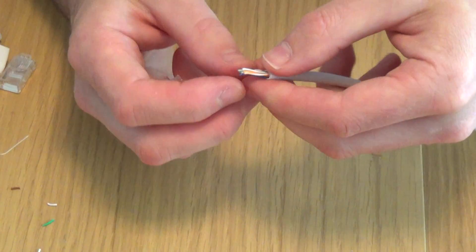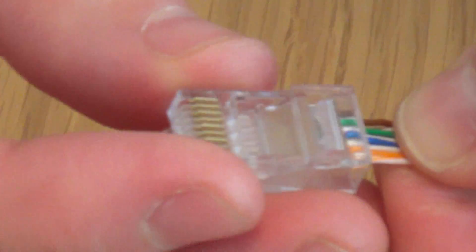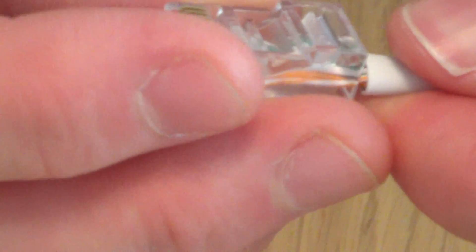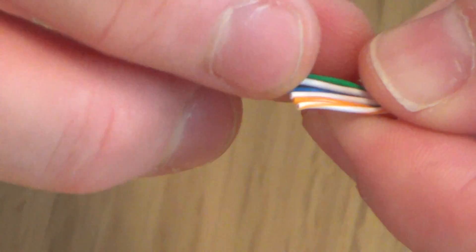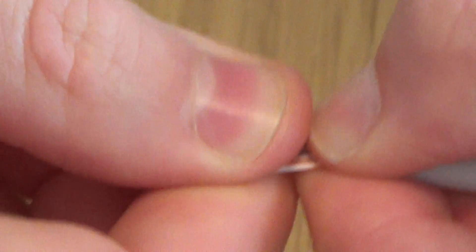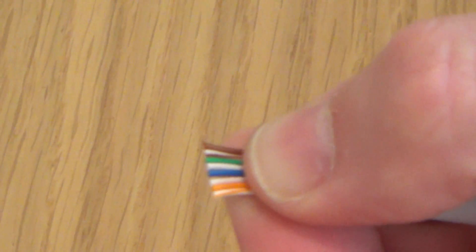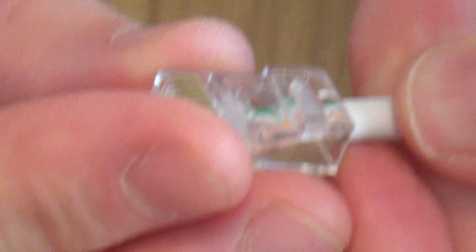Now this is the fiddly bit because often when you push the wires in, they will sometimes lose their place. Okay, so you always have to double check after they've gone in. And also that's not very straight, so let's just straighten that up a little bit, using the cutter part there.